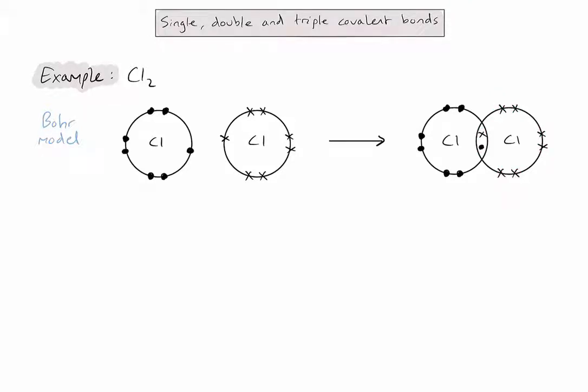To save myself a bit of time and to avoid drawing circles representing shells, it's better to represent these as Lewis diagrams where I simply draw the electrons as dots or crosses around my element symbol. Because in a chlorine molecule, only one pair of electrons is being shared, we call this a single bond.